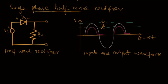But during the negative half cycle, diode VD becomes reverse biased and no current will be allowed to flow through to load resistor RL. That is also shown in the negative half cycle — there is no output voltage. So the positive half cycle conducts, while the negative half cycle does not conduct.